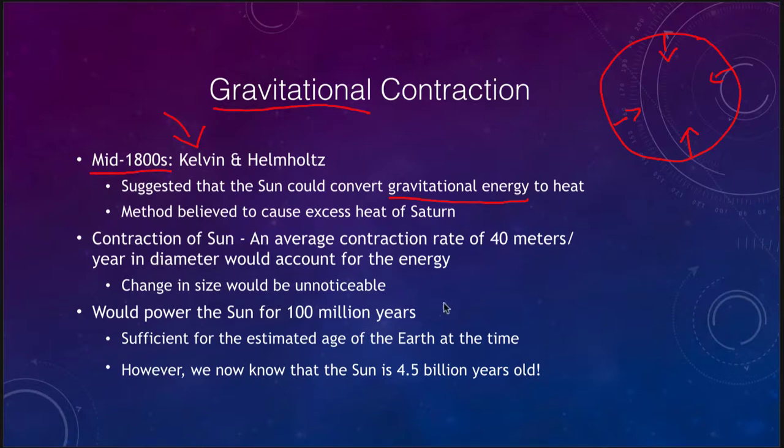It only needs to shrink by about 40 meters per year to account for the amount of energy that we see. At that rate the change in size of the Sun would be unnoticeable. We would not notice the sun changing by a mere 40 meters every year. That would be an incredibly small change compared to the entire size of the Sun.